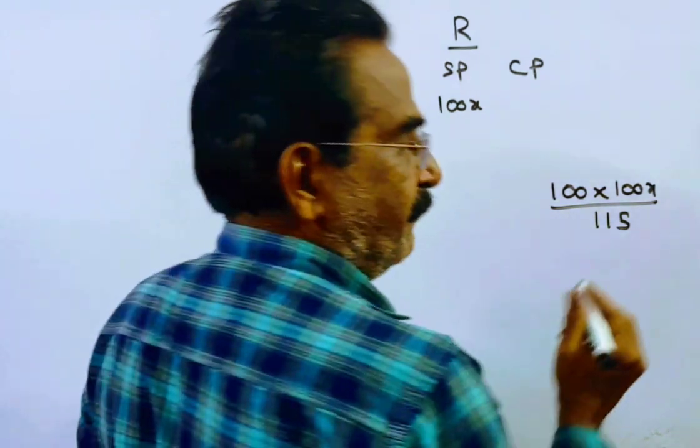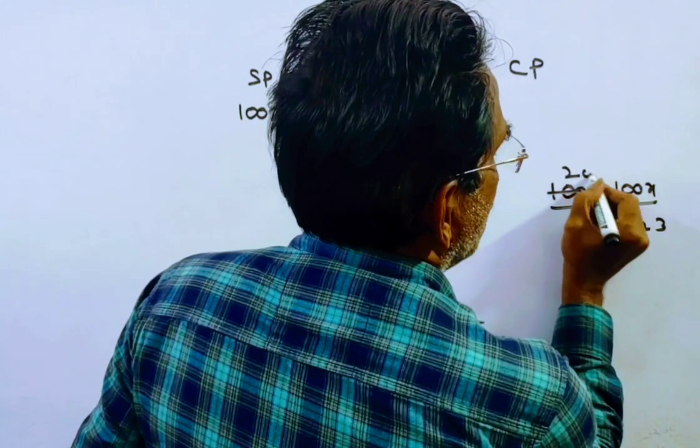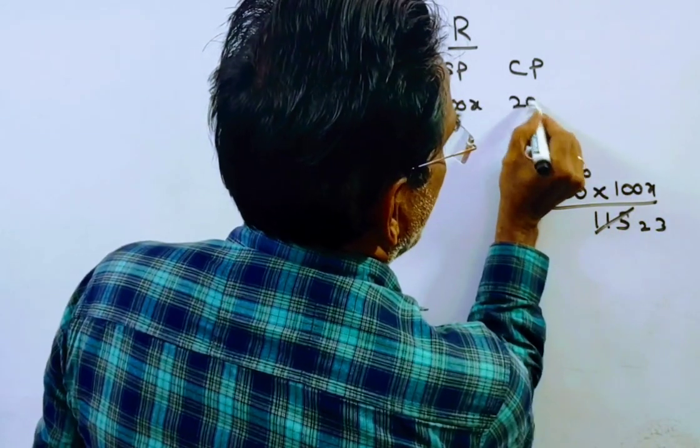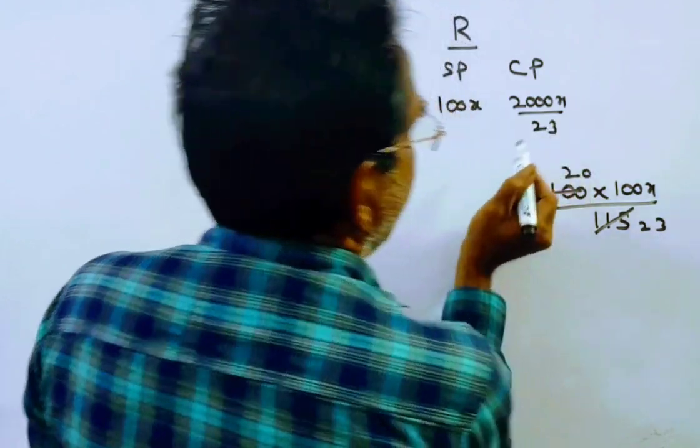Roshan gets a profit of 15%, so the cost price is 2000x divided by 23.